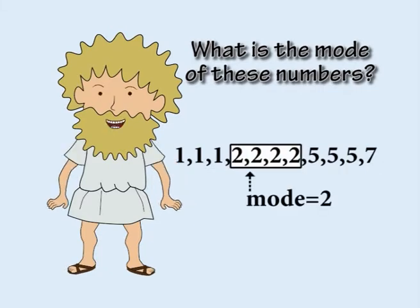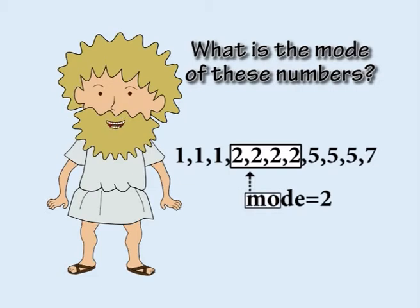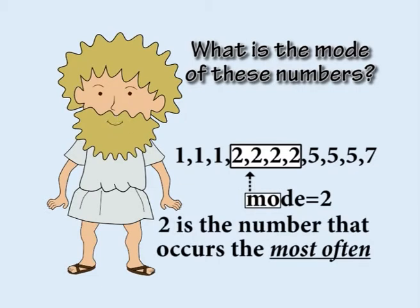Two is the mode because it occurs the most. To remember the definition of the mode, the letters M and O remind you that it stands for the number that occurs the most often.